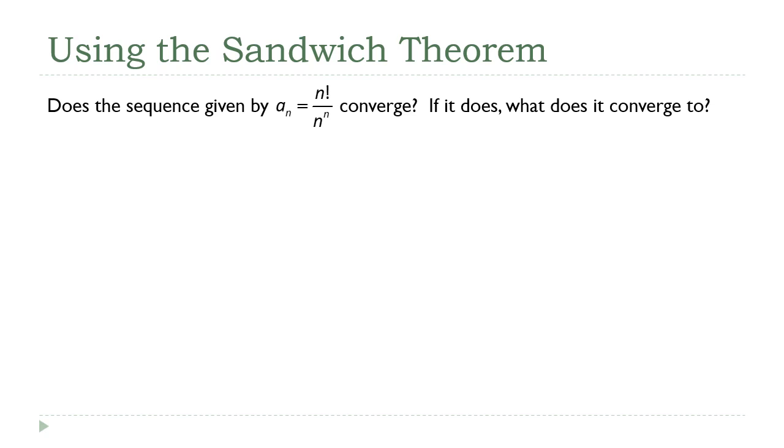Well, the first thing that jumps out to me here is I've got a factorial in the numerator, and I know the factorial function, that increases really fast. It increases faster than any polynomial function, it increases faster even than any exponential function. Just at first glance, you could kind of think, yeah, okay, this is going to go off to infinity, it's going to diverge.